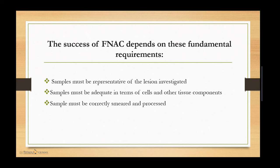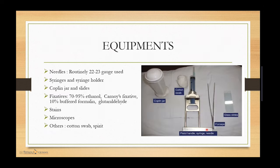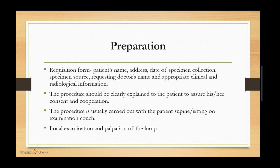The sample must be adequate in terms of cells and other tissue components, and must be correctly smeared and processed. Equipment required for FNAC includes a 22 to 23 gauge needle, syringe and syringe holder, coupling jar, and slides. Fixatives include 90 to 95% ethanol, Carnoy's fixative, 10% buffered formalin, and glutaraldehyde. Stains, microscopes, cotton swabs, and spirit are also needed.